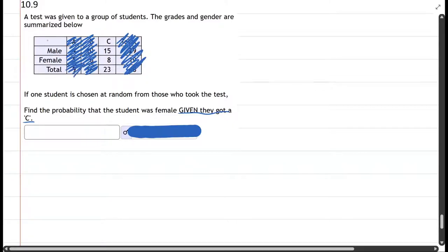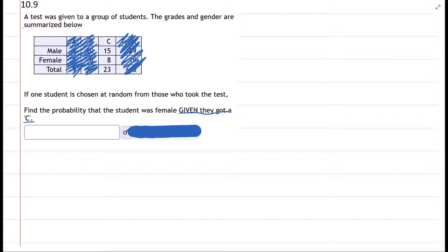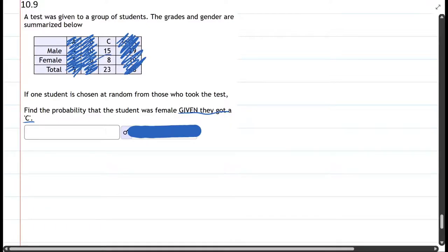So find the probability the student was female. We've taken care of given that they only have a C because we've thrown out every other column. Now we want to find that probability student was female, and what we're going to do is compare the female to the total.